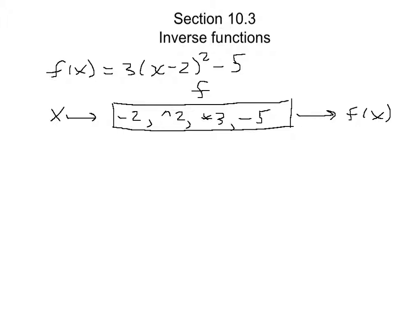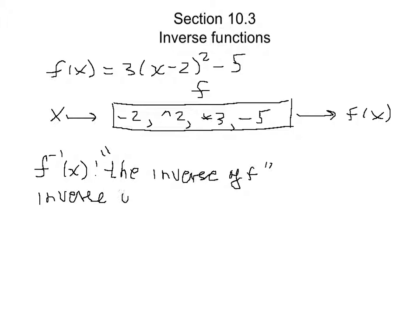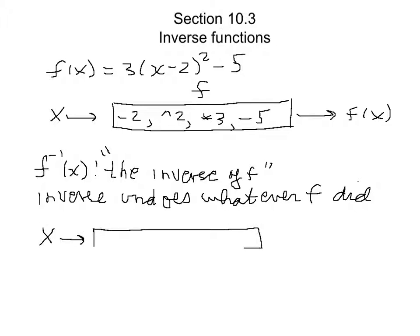Now let's talk about the inverse of f. We write it as f to the negative one, and even though you might think that means 1 over f, in this case it doesn't — we read this as the inverse of f. We want to figure out, given f as a function, what the inverse does. The inverse just undoes whatever f did. Here's x coming into the inverse function.